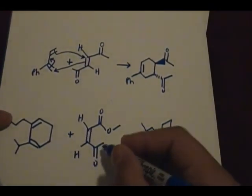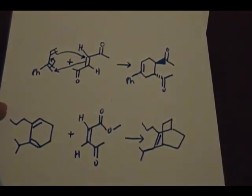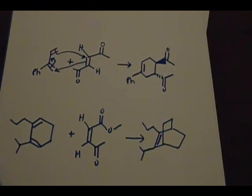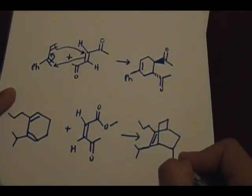So the endo position - so since they're cis, these two will definitely go in the endo position, similar to the chair conformation where they will go in the equatorial position because it's more stable. So the endo position is straight down.